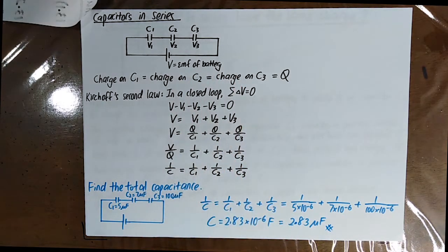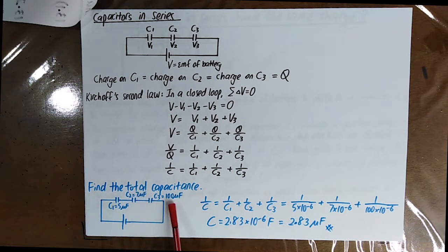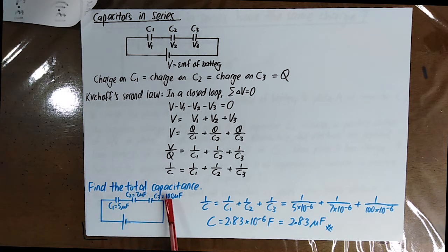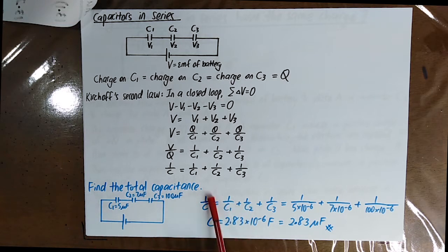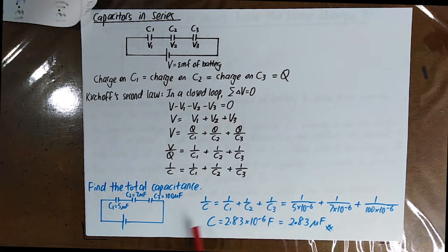For example, please find the total capacitance of the following circuit. You know that C1, C2, and C3 are connected in series, and therefore you can use this formula to find the resultant capacitance.